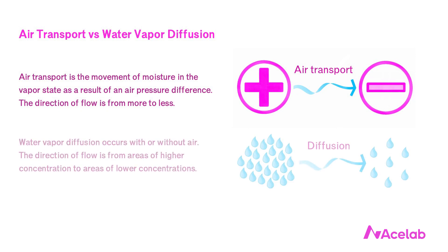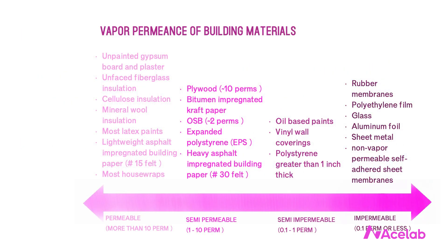But what about water vapor diffusion? This one is a lot less intuitive. Diffusion will occur with or without air. Individual molecules of water will move from areas of higher concentration to areas of lower concentration. If you take something wet and put it in direct contact with something dry, the dry thing will become wetter and the wet thing will become drier. We can actually measure the degree to which materials will permit this kind of water vapor diffusion through them — we call that characteristic of a material its permeance, and the unit of measurement we use is the perm.